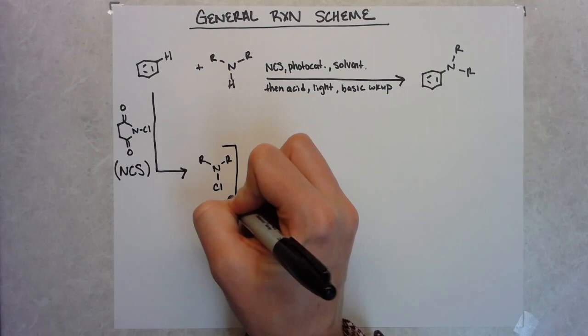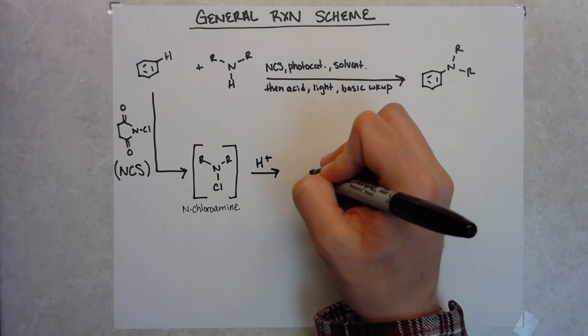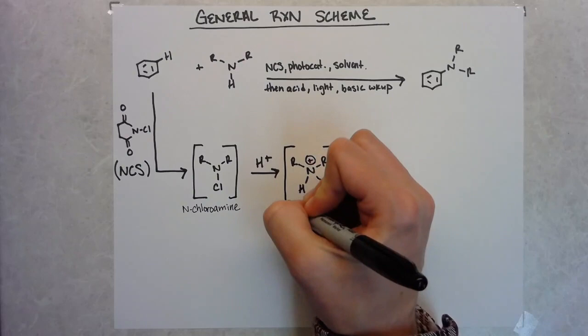So if we look a little bit closer about what's going on in this reaction, NCS adds to the amine, making an N-chloramine, and then upon addition of acid, the species becomes protonated. With light, the chloride anion leaves. And then from here, it's just standard EAS chemistry, which allows the formation of the desired product.